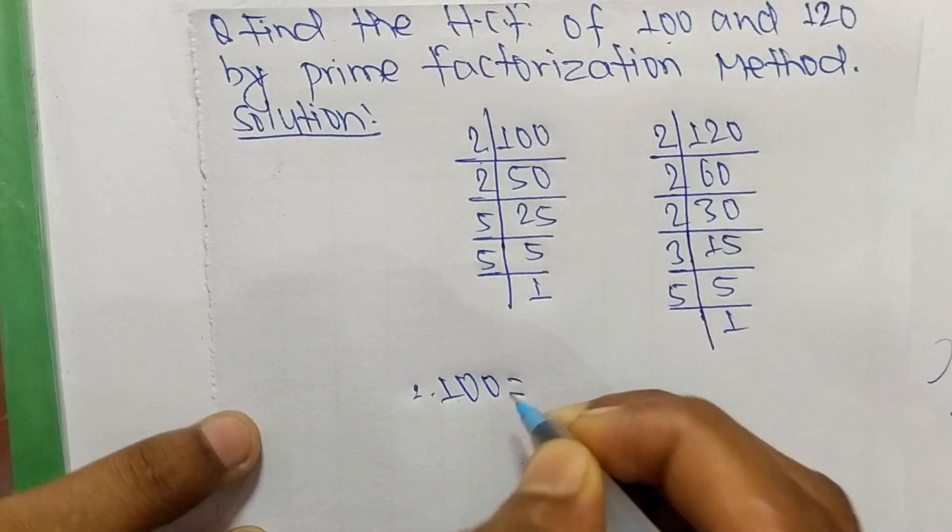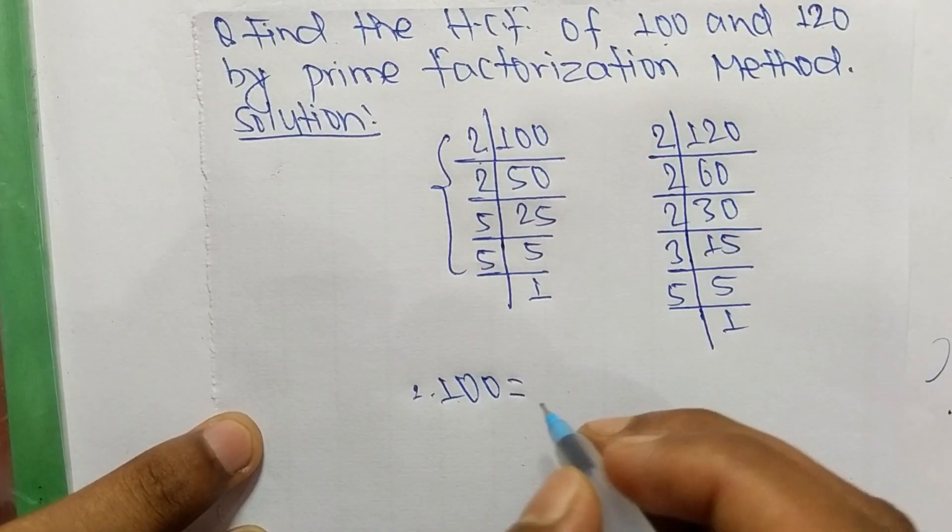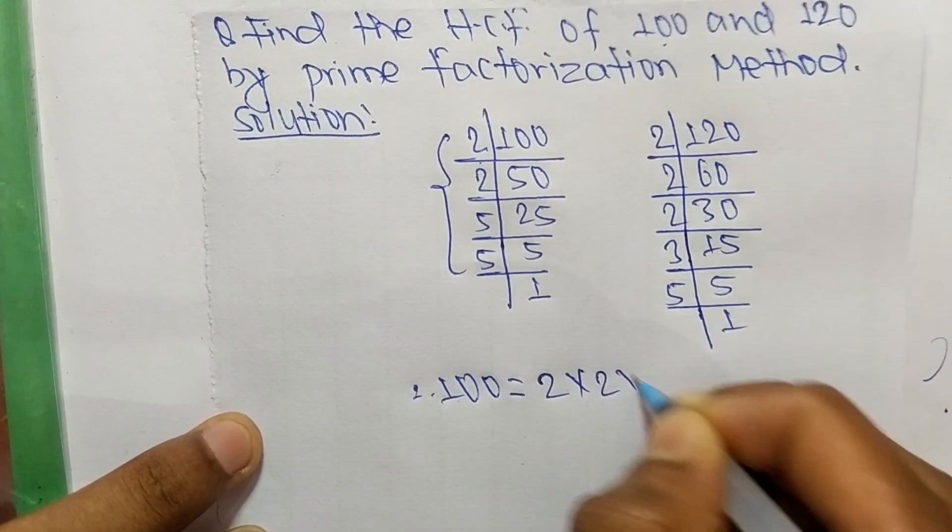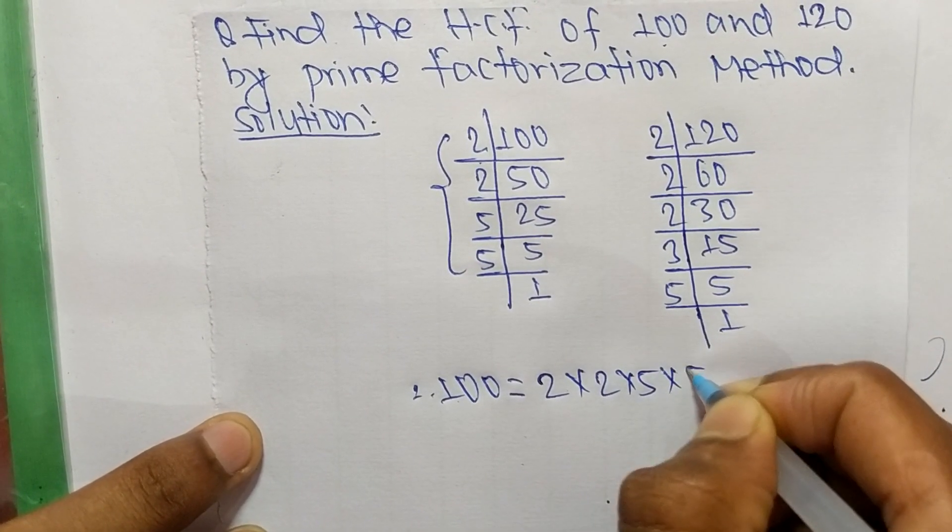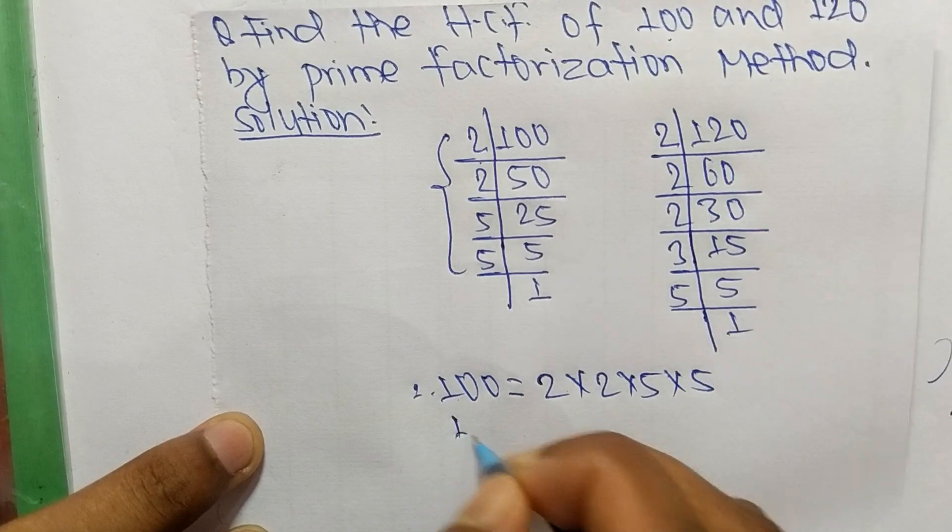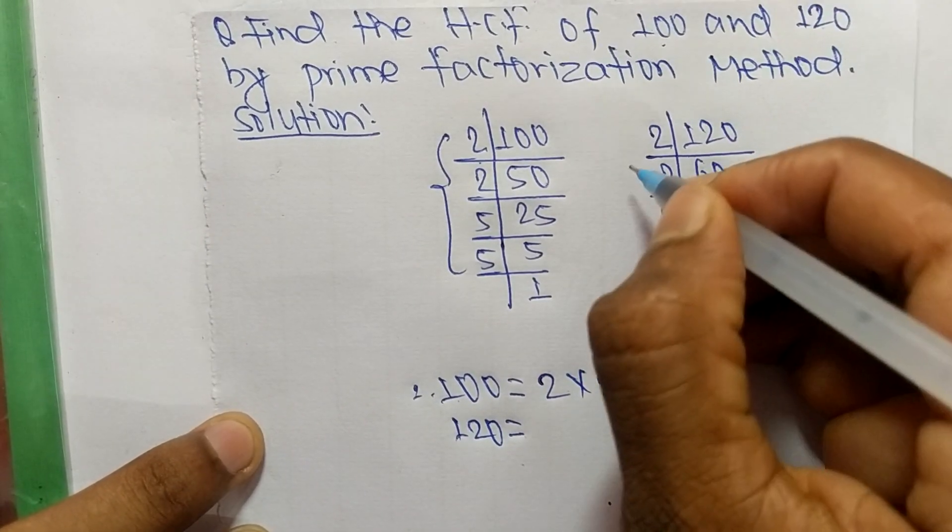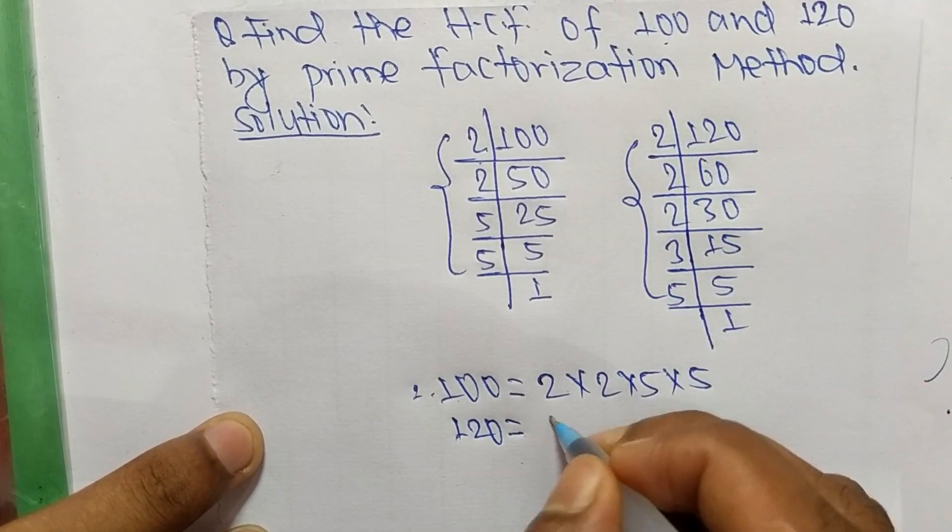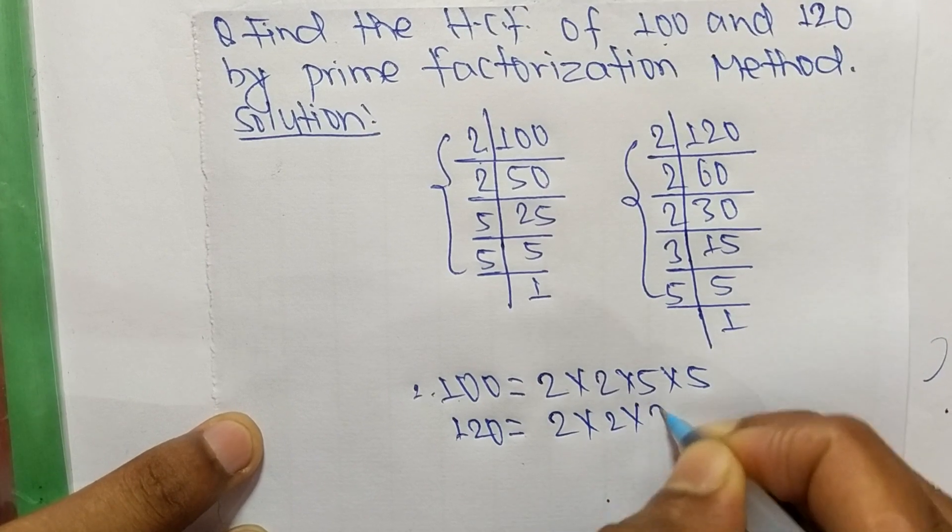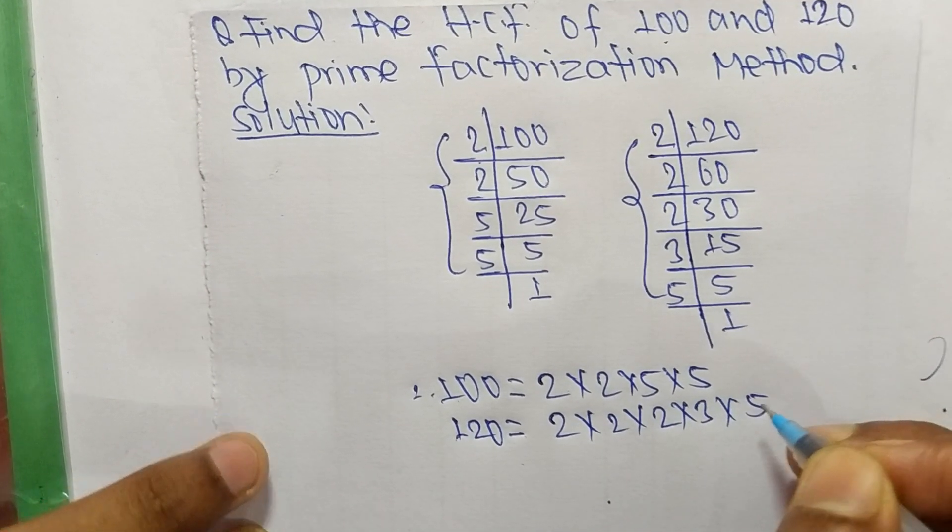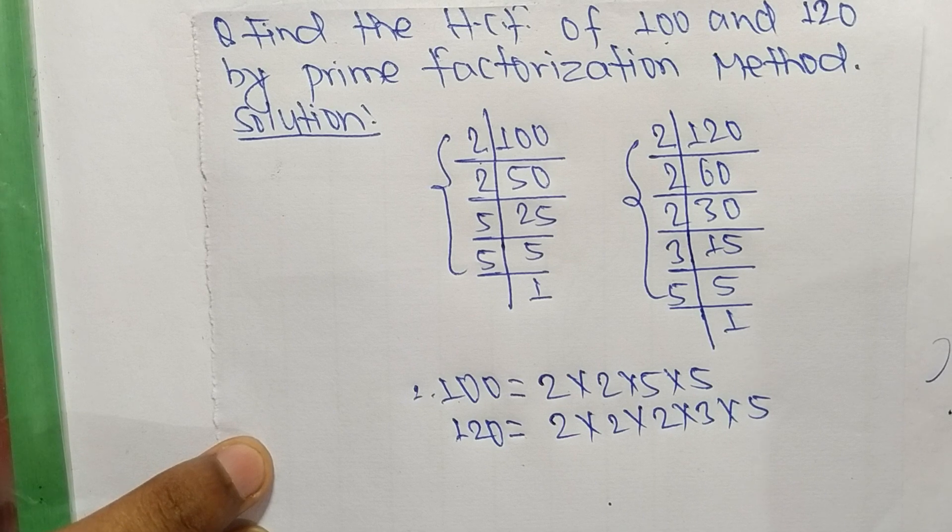From these prime factors we can write 100 is equal to 2 times 2 times 5 times 5, and 120 is equal to 2 times 2 times 2 times 3 times 5.